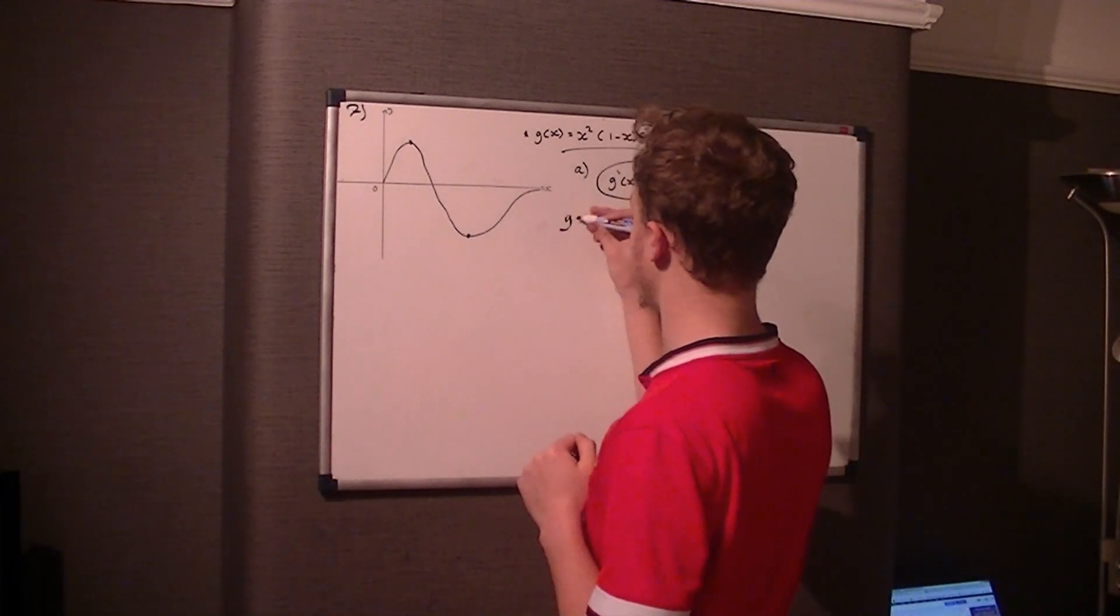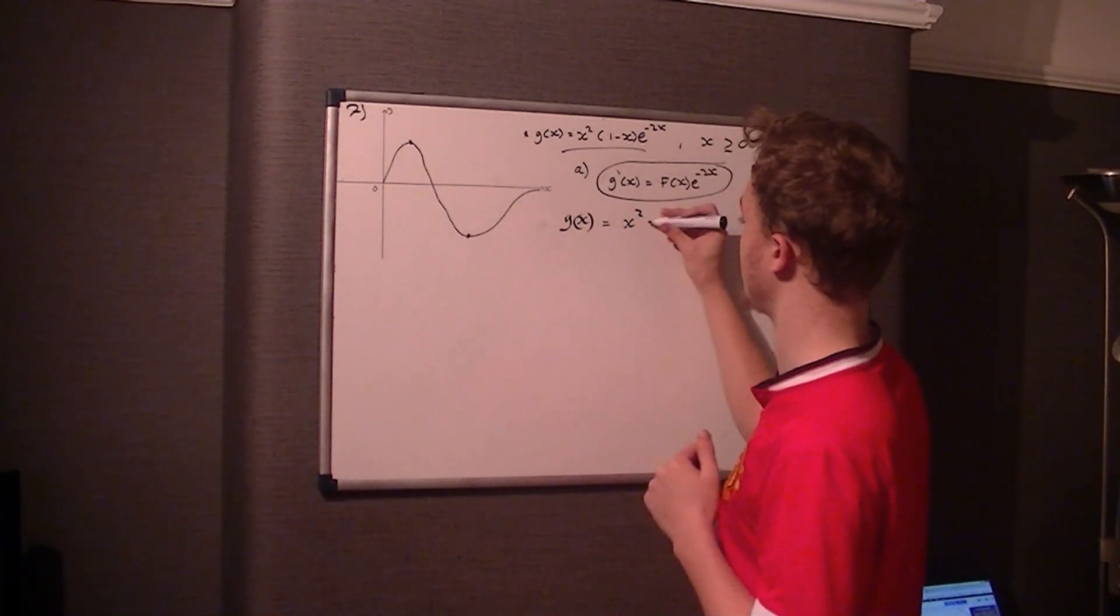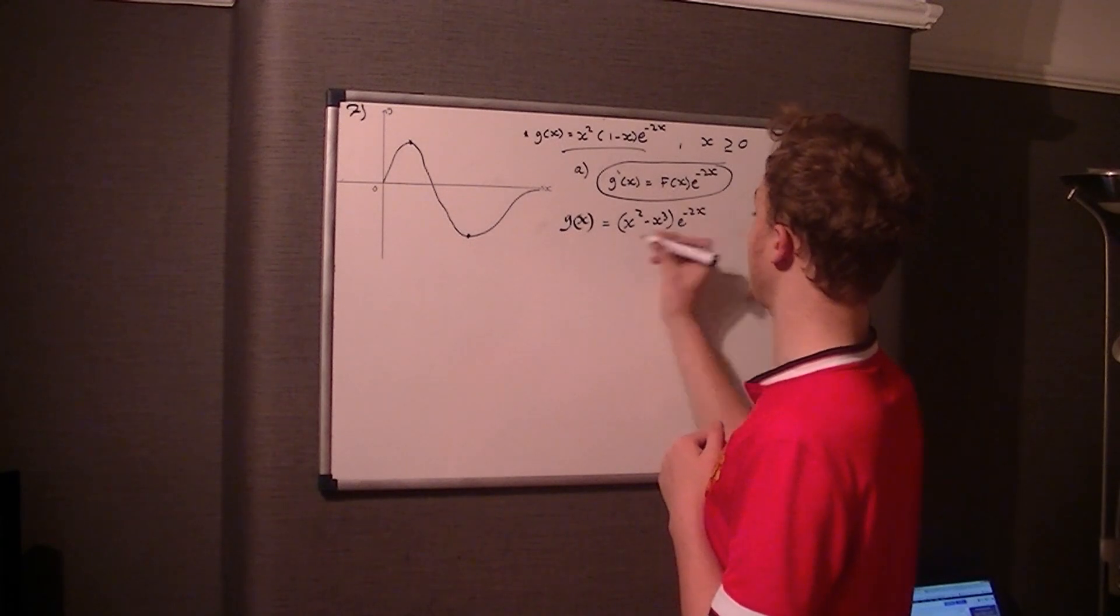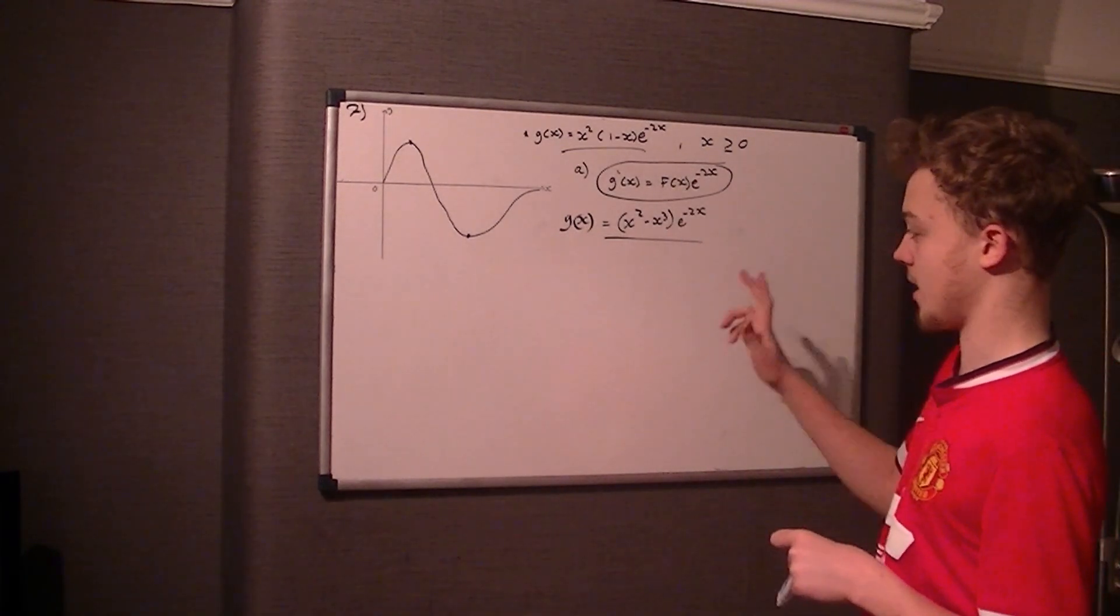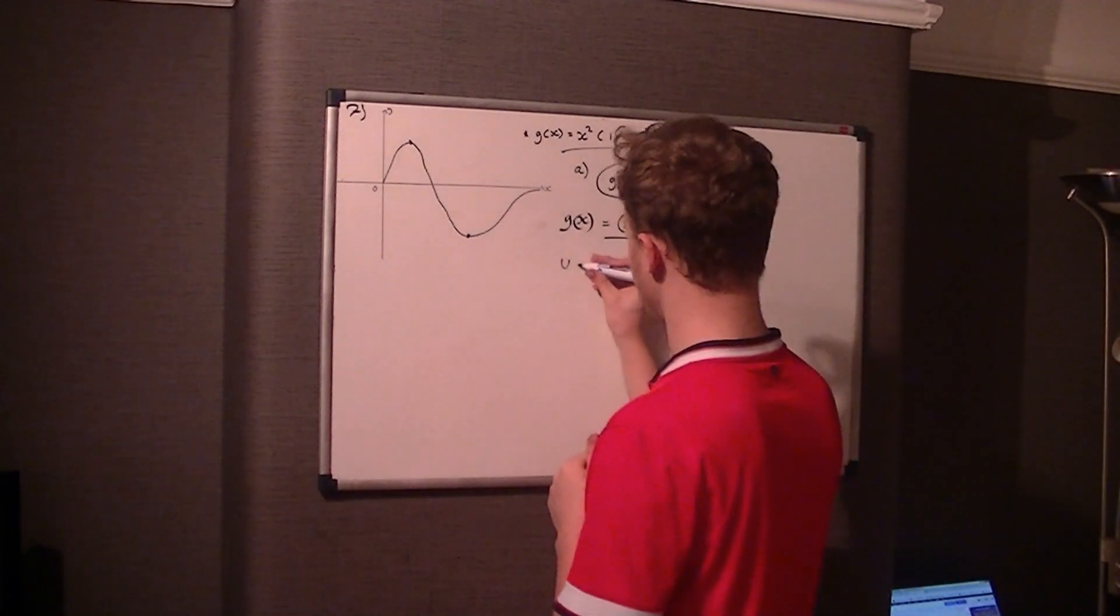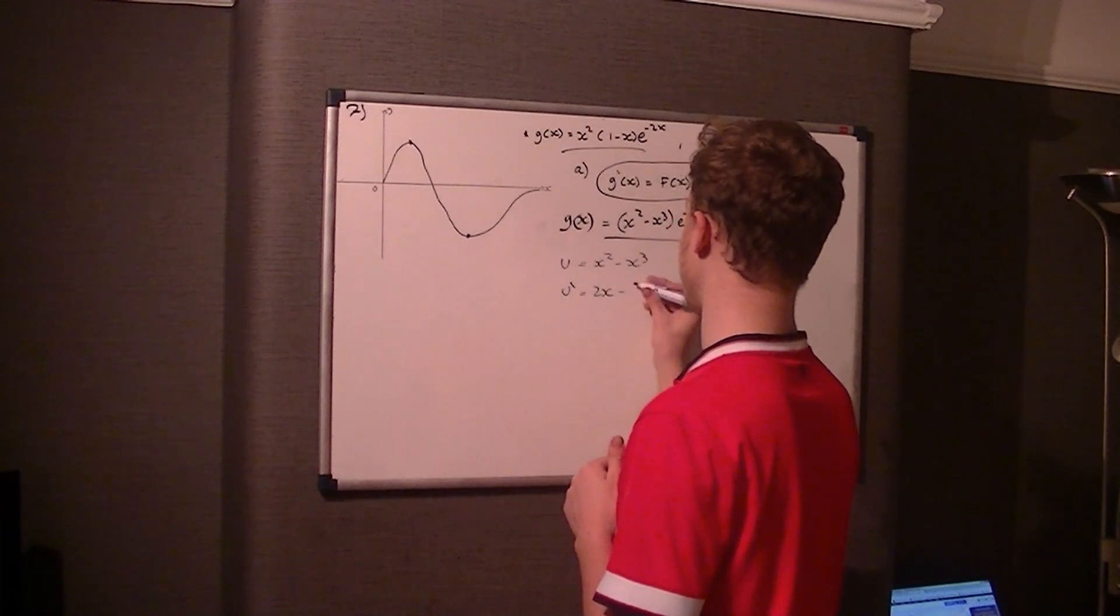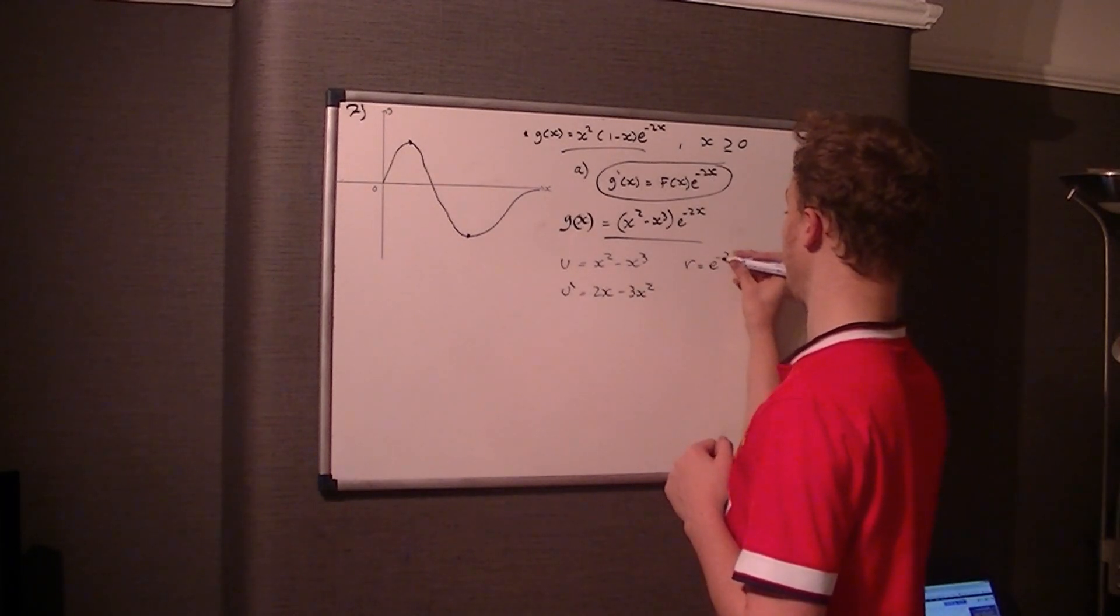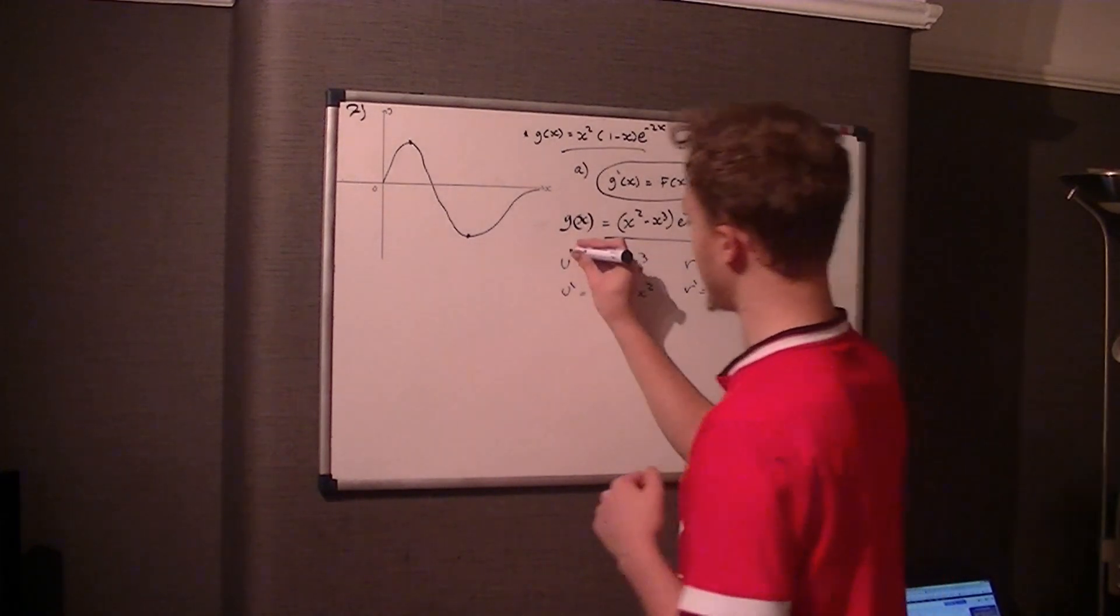So let's go ahead and do this. First thing I would do is rewrite g of x. I would expand it, so x squared times 1 take x is going to be x squared take x cubed times e to the negative 2x. Now there's no point going any further because we've got to differentiate it. It looks like three functions but x squared take x cubed is actually one function of x. So we use our product rule for differentiation. u is equal to x squared take x cubed, so therefore u dashed is 2x take 3x squared. v is equal to e to the negative 2x and v dashed is equal to negative 2 e to the negative 2x.